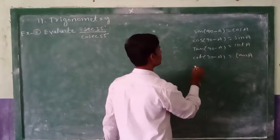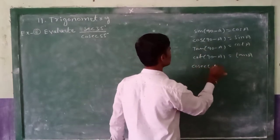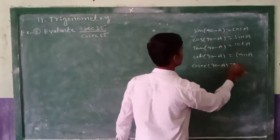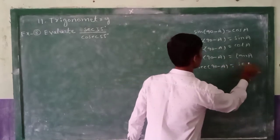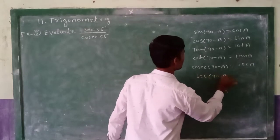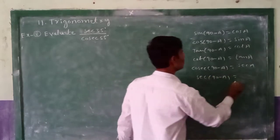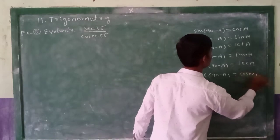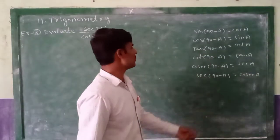Next, cosec(90-a) = sec a, sec(90-a) = cosec a